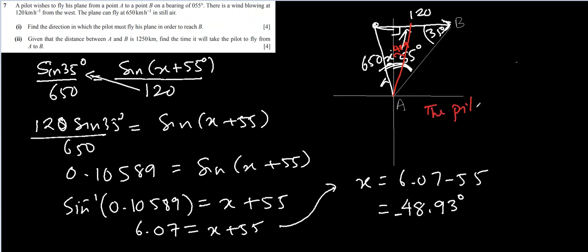So what we will write, the pilot flies on a bearing of 048.90 degrees. You can write 048.90 degrees. So since it is north and we know this angle, this angle is 48.9, so that is the bearing where he should fly.